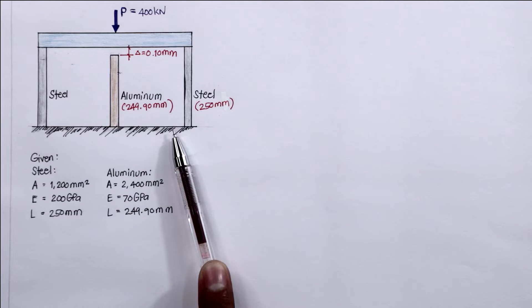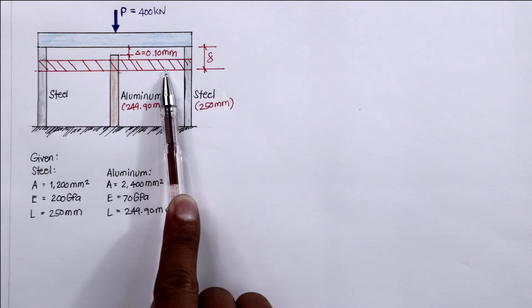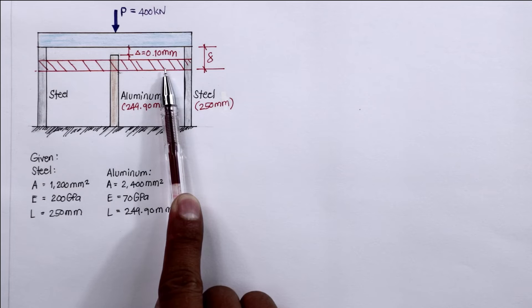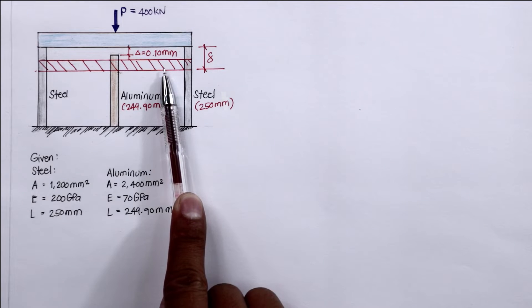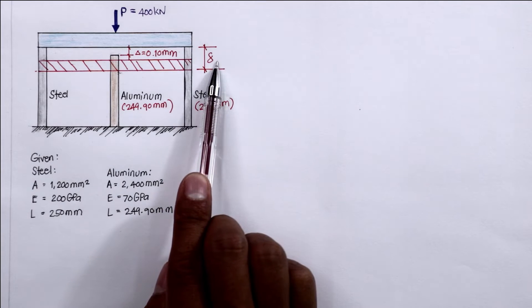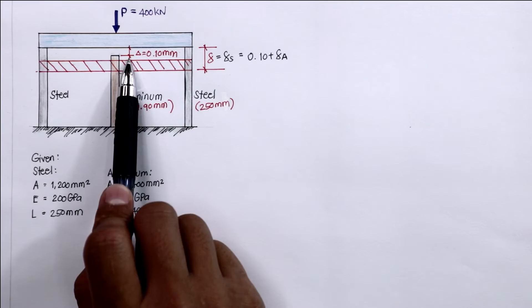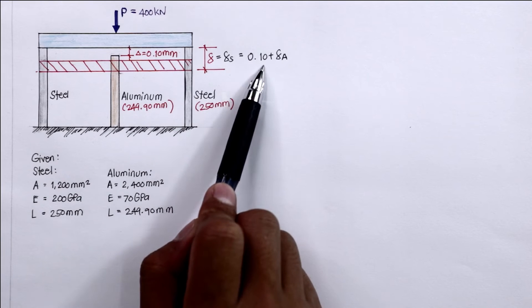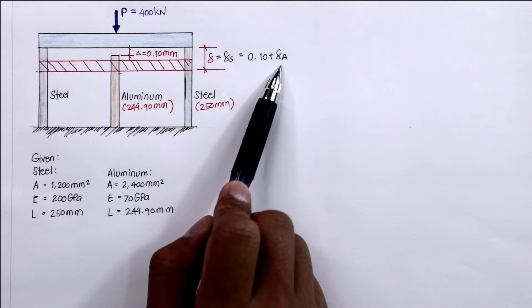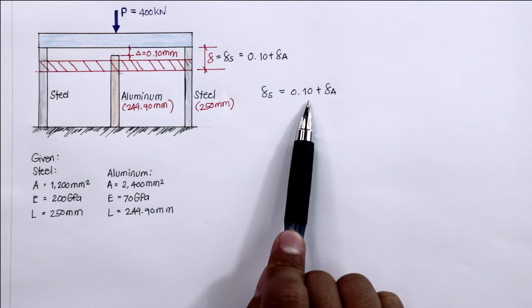The figure shows the configuration before force P is applied. When force P is applied, there will be deformation in both the steel and aluminum bars. The final position of the rigid platform after placing the 400 kN force defines the deformation. The deformation of the platform equals the deformation of steel. However, because of the 0.10 mm gap in the aluminum portion, the deformation of steel equals 0.10 mm plus the deformation of aluminum. This gives us Equation 1: δ_steel = 0.10 + δ_aluminum.